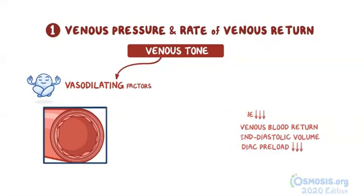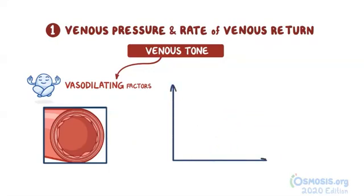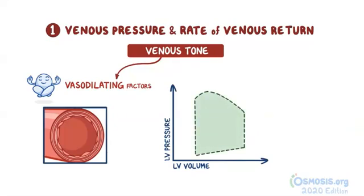This can also be visualized through pressure-volume loops — graphs showing left ventricular pressure on the y-axis and left ventricular volume on the x-axis. The green dotted loop represents one normal cardiac cycle. When vasodilating factors decrease cardiac preload, both left ventricular pressure and end-diastolic volume decrease, so the loop shifts to the left.